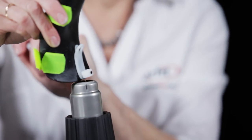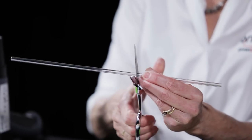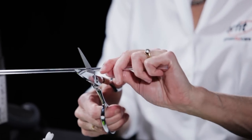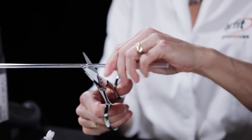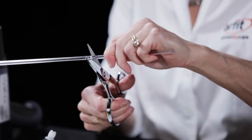The OrphiTube can be shortened to the appropriate length by scoring with scissors and breaking cleanly at the mark. Bending the OrphiTube does not require heating.